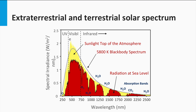The red area reflects the spectrum arriving at the Earth's surface. As you can see, a significant fraction of the spectral power density is lost by traveling through the Earth's atmosphere due to scattering and absorption by molecules and particles in the atmosphere. The UV part of the spectrum is absorbed by ozone in the atmosphere. In the infrared, oxygen, water, and carbon dioxide absorb light.